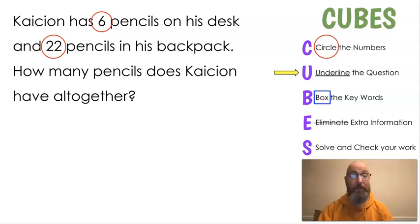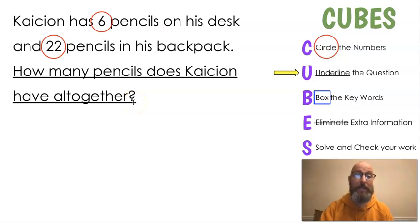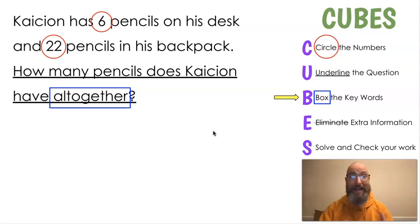Next, we're going to underline the question. That means we should all be looking for the question mark. And our question is, how many pencils does Caseion have all together? Next, we're going to look for the keywords. Does anybody know what the keyword in that question is? All together. And that keyword all together, that means you're adding.